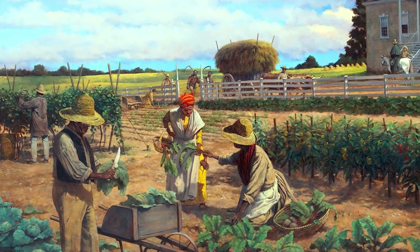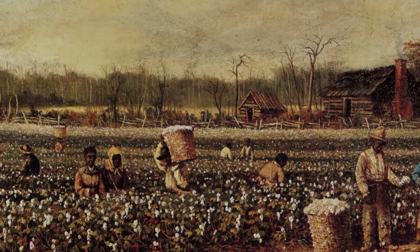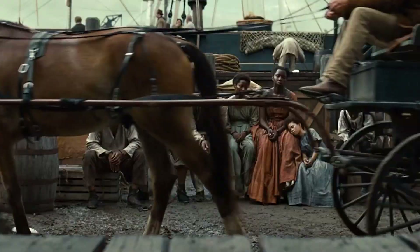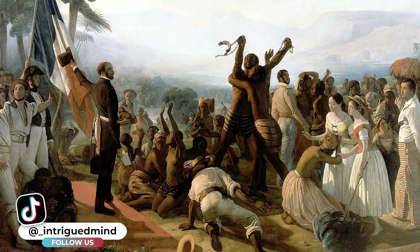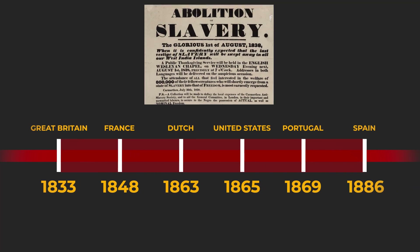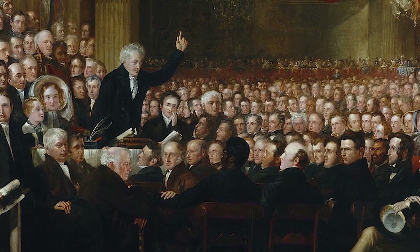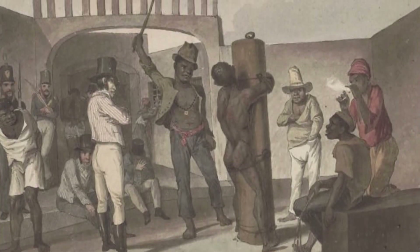One major reason was the economic benefit that slavery provided to slaveholding societies. Slave labor was crucial to the economies of many countries, particularly in the Americas, where slaves were used to grow cash crops like sugar, tobacco, and cotton. Another reason that slavery persisted was the belief in the inherent racial superiority of white people over people of African descent. This belief was used to justify the enslavement of Africans and to maintain a system of racial hierarchy. The Enlightenment ideals of equality, freedom, and human rights were often not extended to slaves, who were considered property rather than human beings. However, one by one, the major slave trading nations began to abolish slavery. From 1833 to 1886, abolition laws came into effect due to a shift in the public's perspective on liberty. The abolition of slavery was a complex process that required the political will and economic resources of governments and society as a whole, and was often met with fierce resistance from those who benefited from the labor and exploitation of enslaved people.